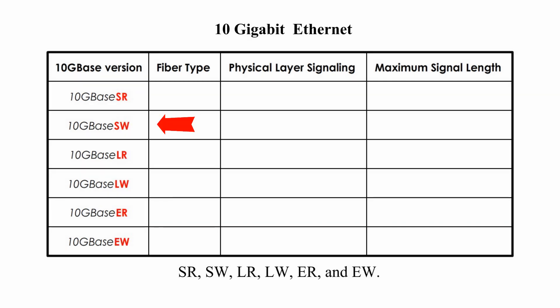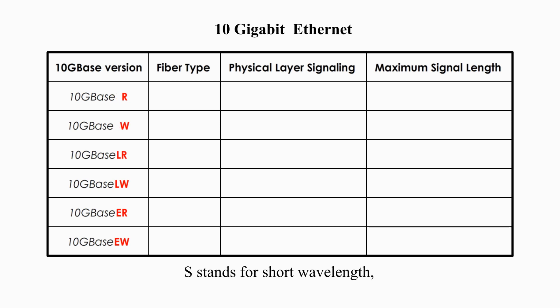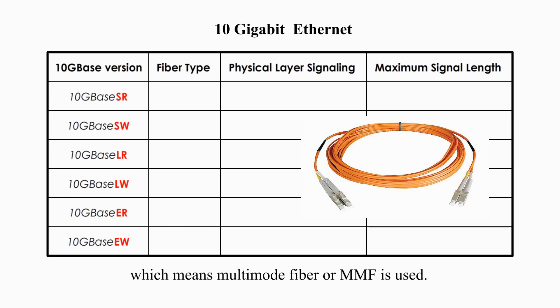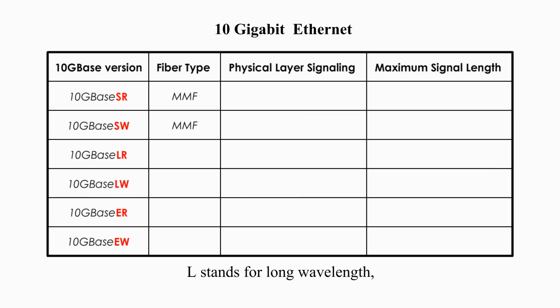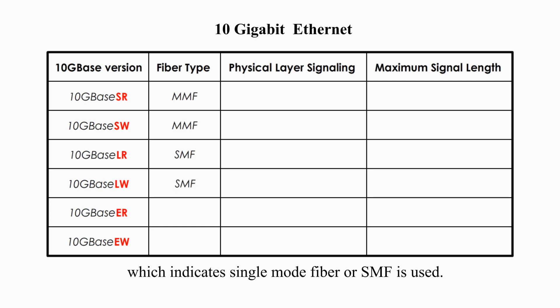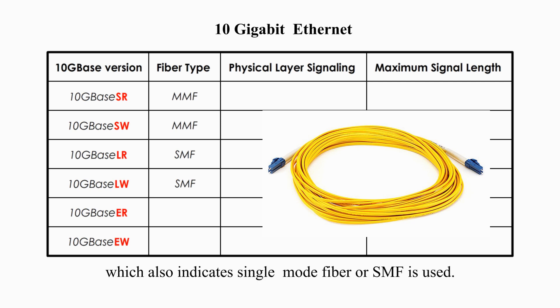The six versions end in SR, SW, LR, LW, ER, and EW. The first letter indicates the wavelength and fiber type: S stands for short wavelength, which means multimode fiber (MMF) is used. L stands for long wavelength, which indicates single-mode fiber (SMF) is used. E stands for extended long wavelength, which also indicates single-mode fiber (SMF) is used.